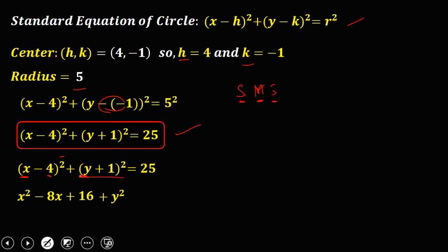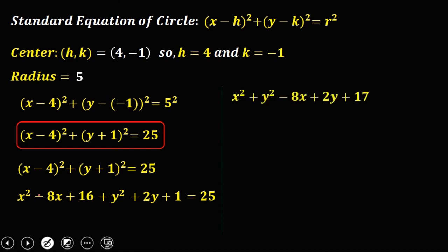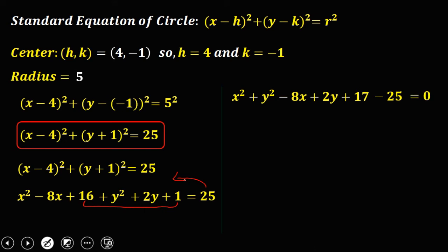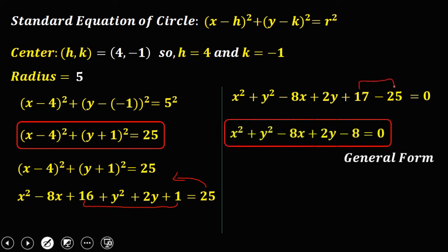For (y plus 1) squared: y squared, then 2 times 1 gives 2y, then 1 squared gives 1. Equals 25. Combining like terms: x squared plus y squared minus 8x plus 2y. Then 16 plus 1 is 17. Transposing 25 to the left gives negative 25, so 17 minus 25 is negative 8. The general equation of the circle is: x squared plus y squared minus 8x plus 2y minus 8 equals 0.